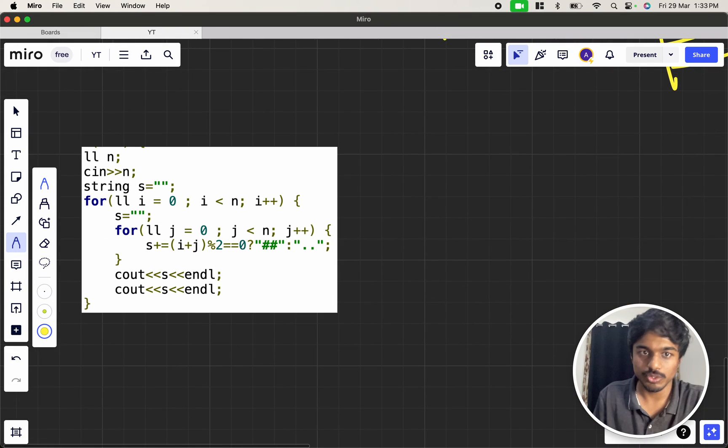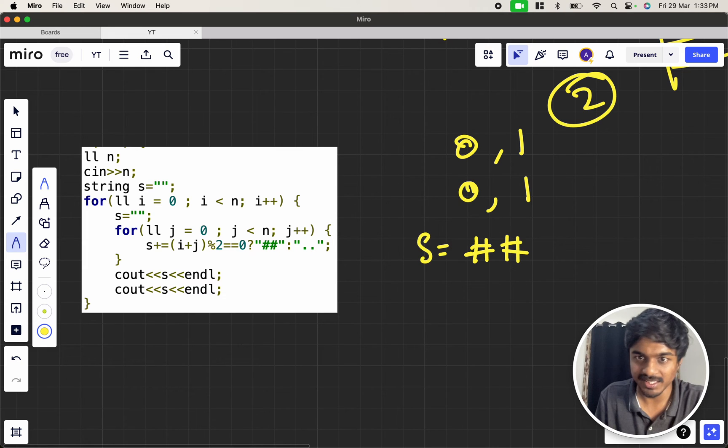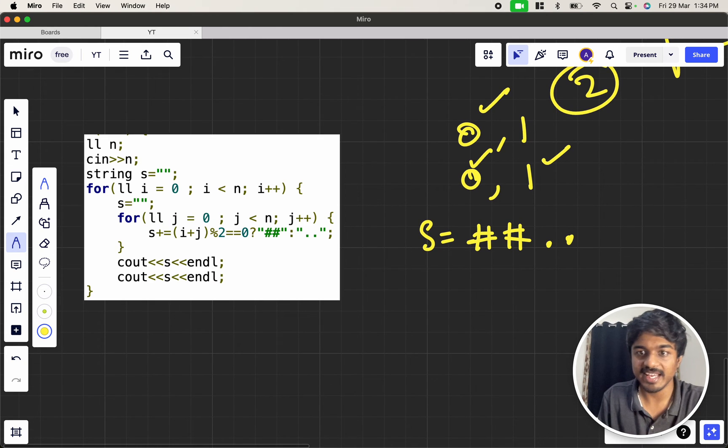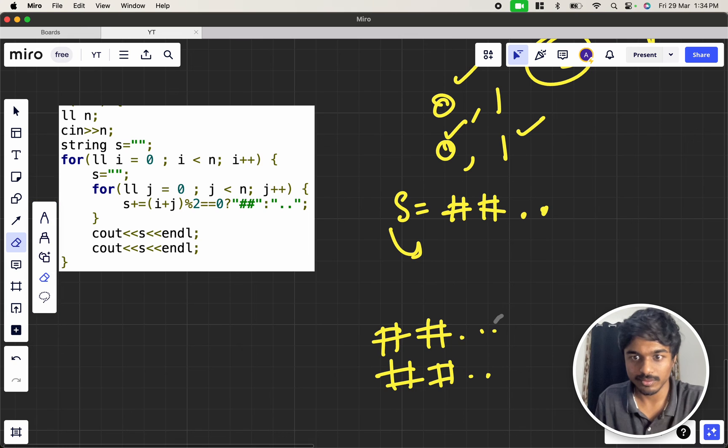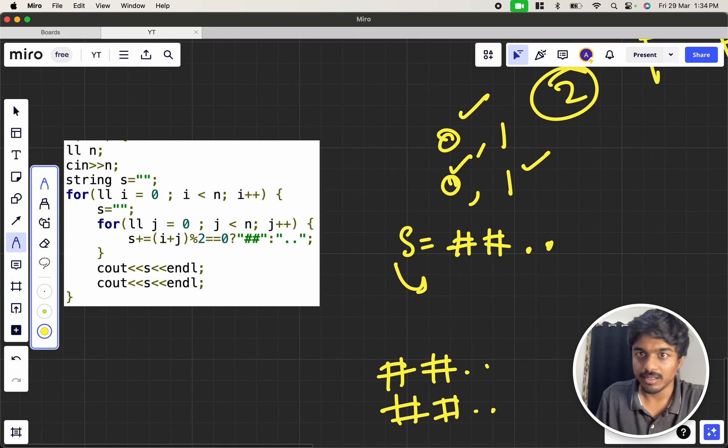i equal to 0 and i can be 1, j equal to 0 and j can be 1. Now 0 + 0 is hash, right? Hash hash, s becomes hash hash. If j - i equal to 0, j equal to 1 - it becomes odd. Now s gets appended with dot dot. I am printing s two times. If I'm printing s two times what happens? It is hash hash dot dot, hash hash dot dot. This is processed.